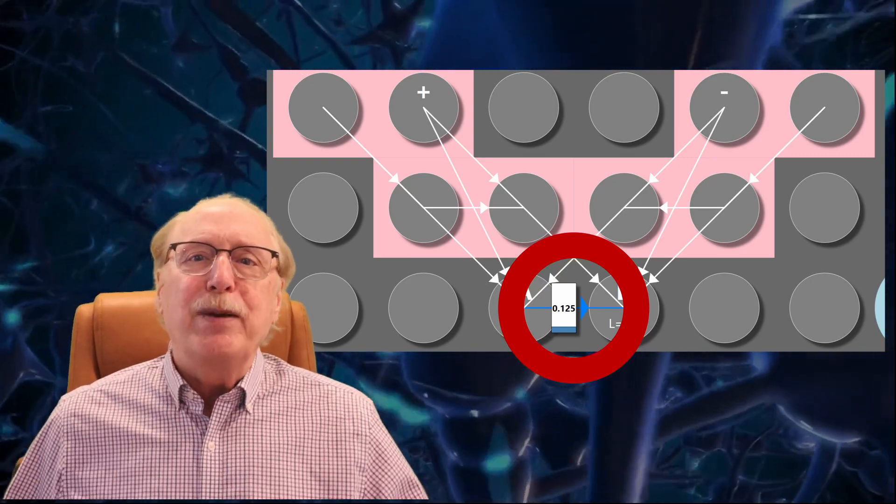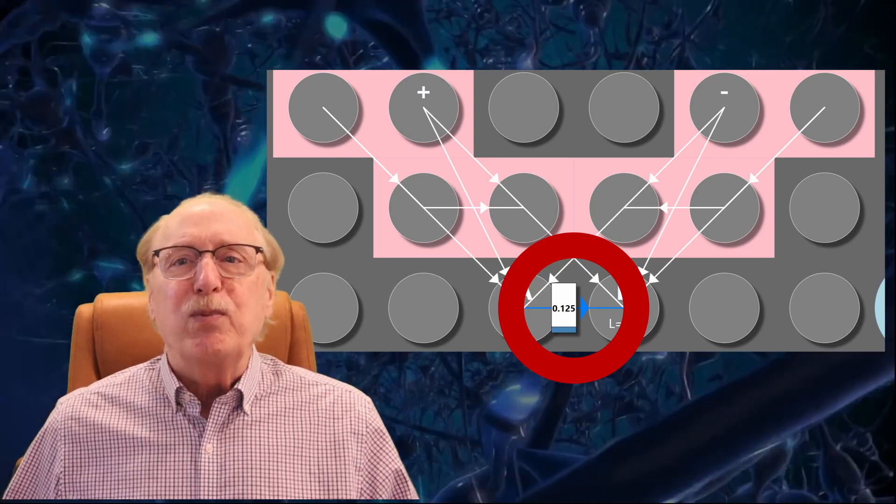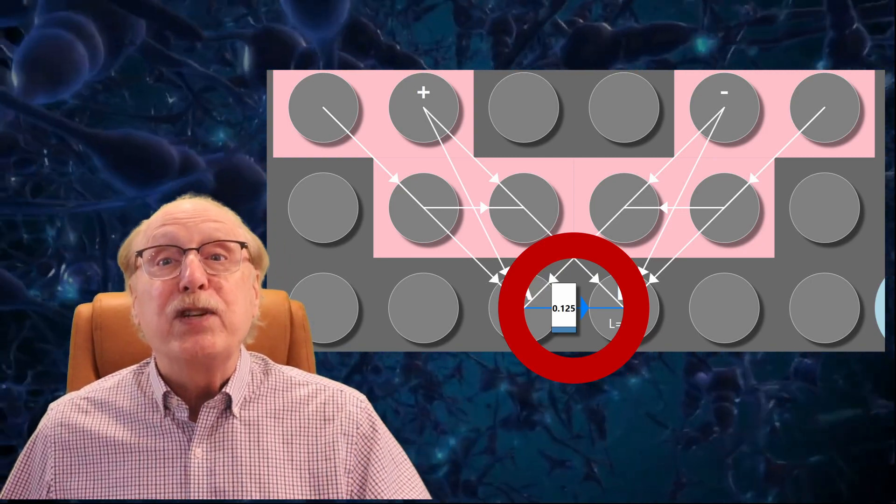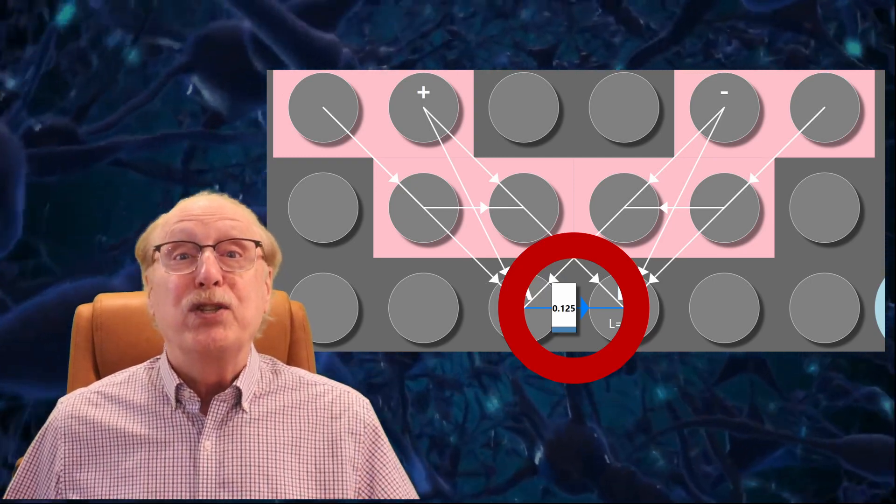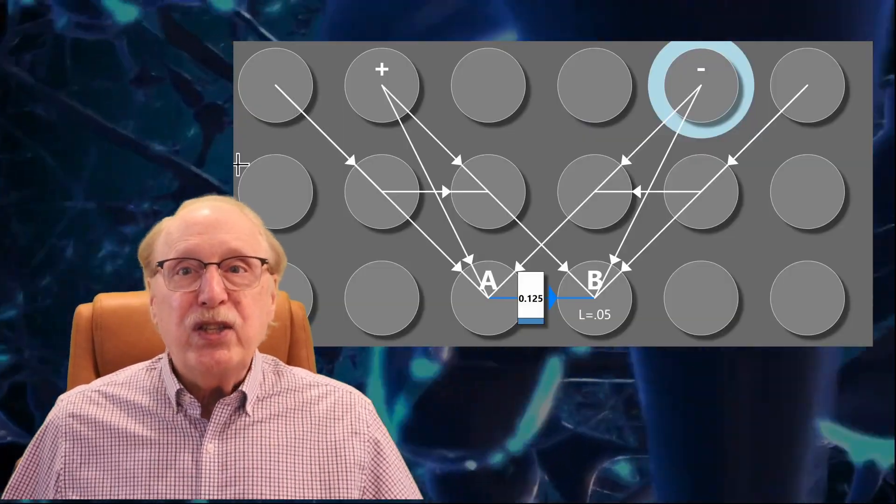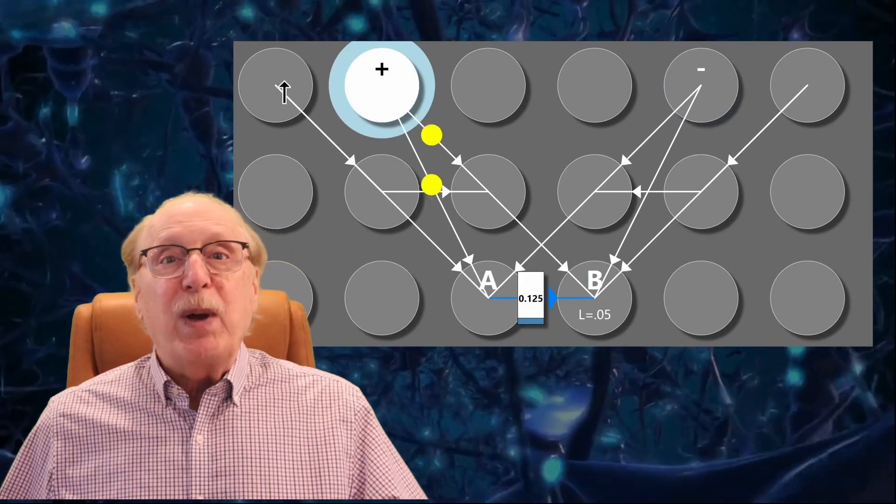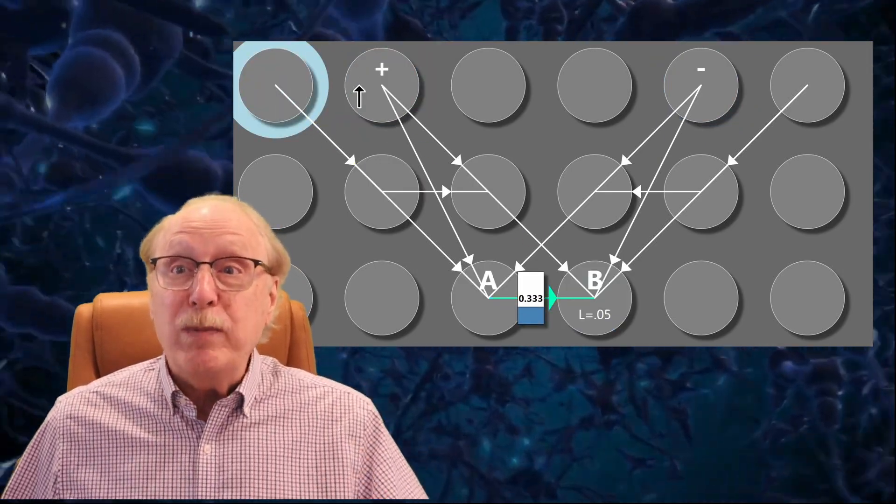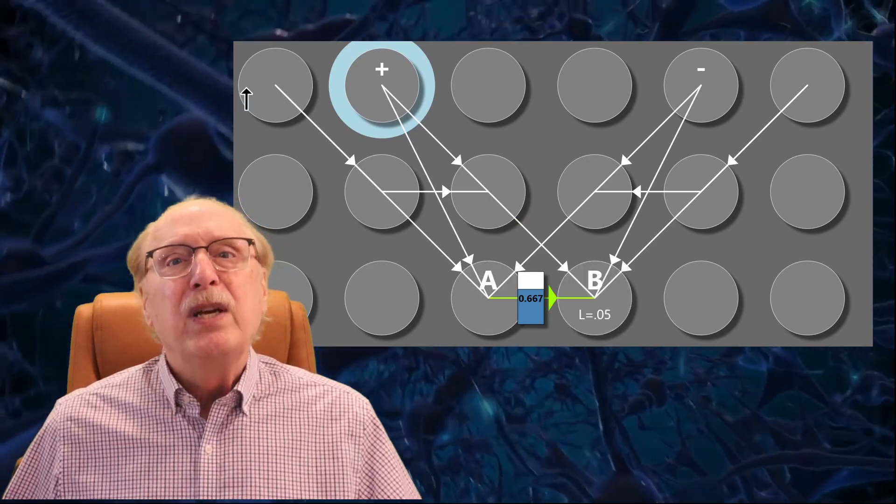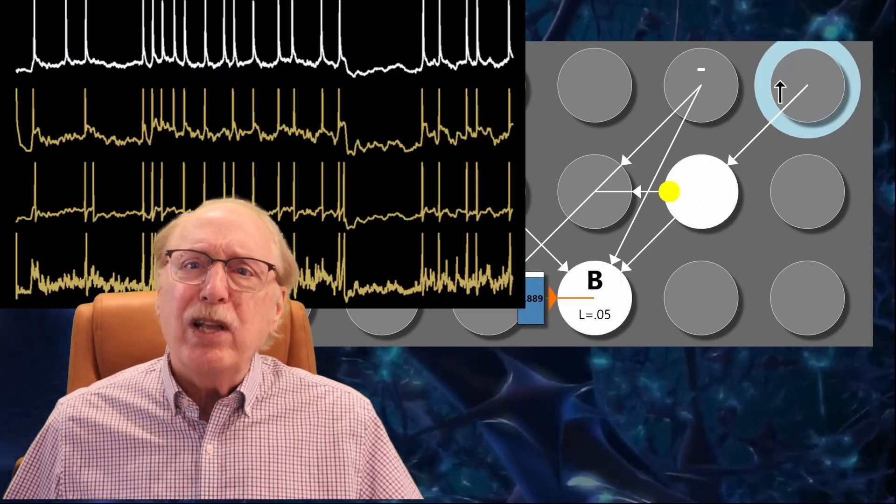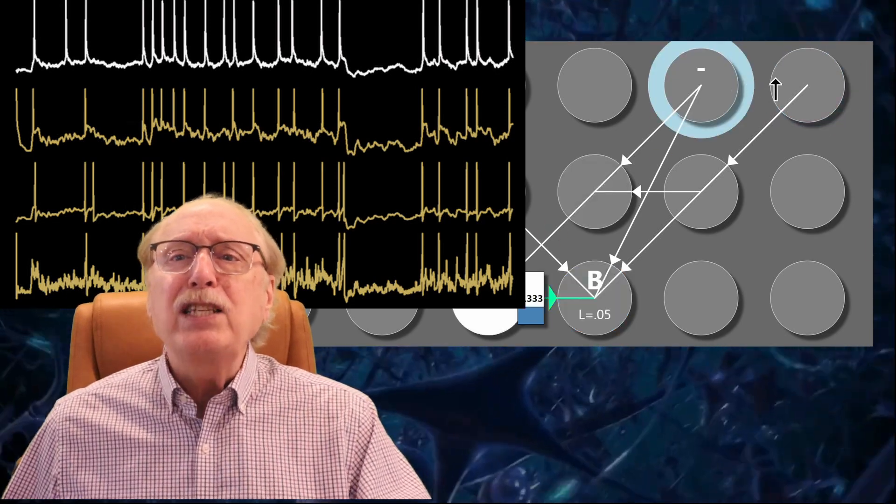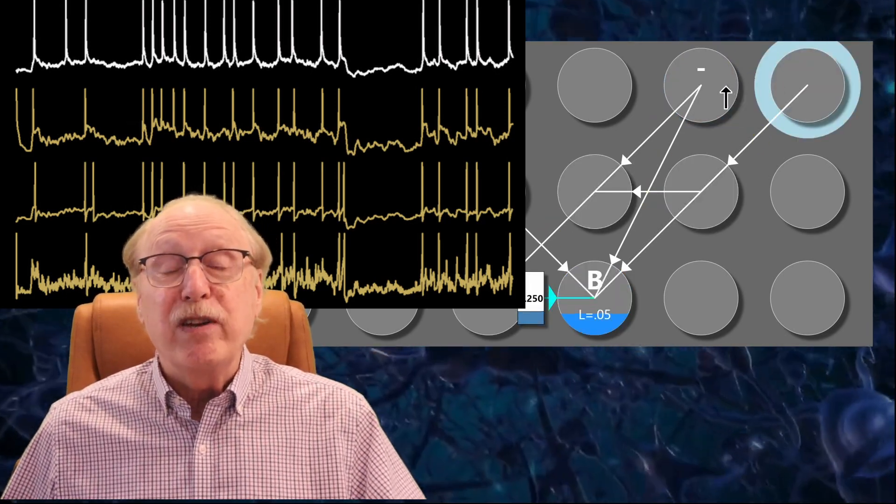But if we just let neurons A and B fire in the normal course of processing information, the precise relative timings are unlikely to result in any useful learning. The more precision you want in setting a synapse weight, the more accurately you need to control the relative spike timing. In this simulation, the relative spike timing is selected to be in precise one millisecond intervals. In a brain where electrochemical noise levels are high, it's impossible to control spike timings with that degree of precision.